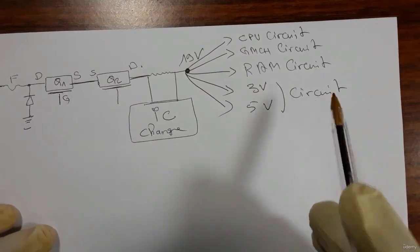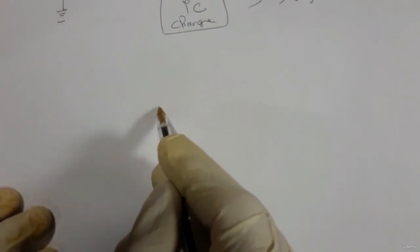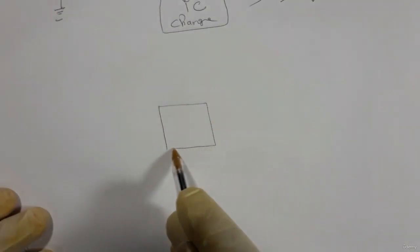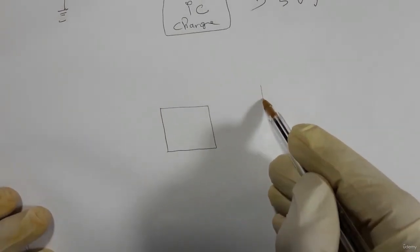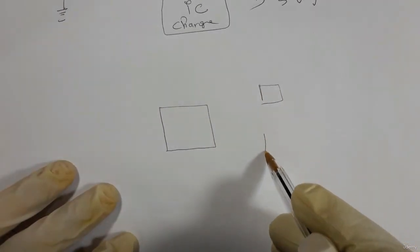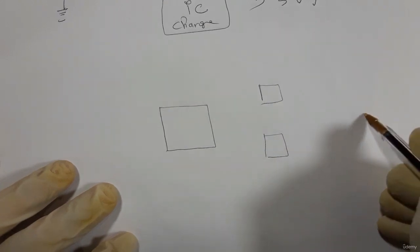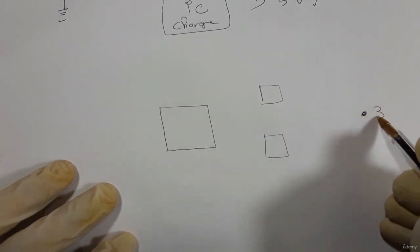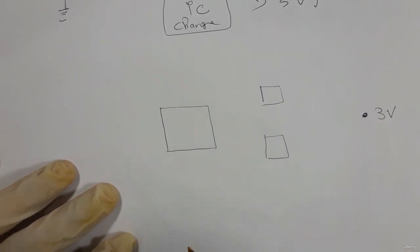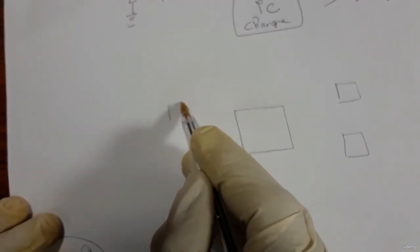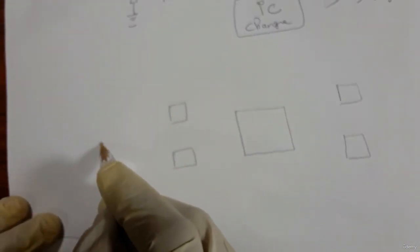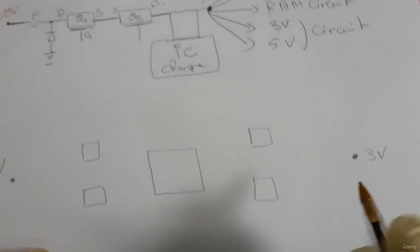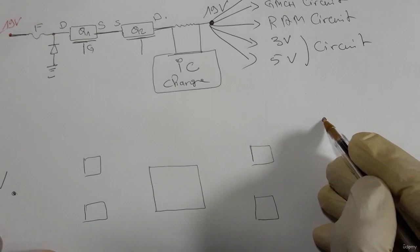For the 3V and 5V circuit, you can find a power management IC with two MOSFETs here to generate 3V, and another two MOSFETs here to generate 5V.